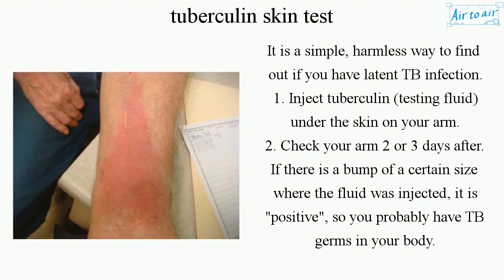It is a simple, harmless way to find out if you have latent TB infection. Step 1: Inject tuberculin under the skin on your arm. Step 2: Check your arm 2 or 3 days after.